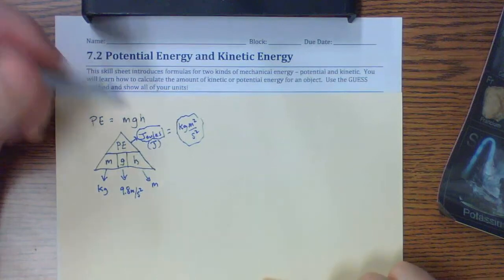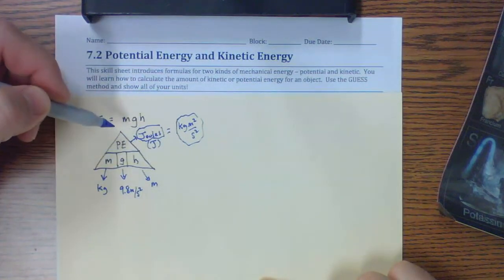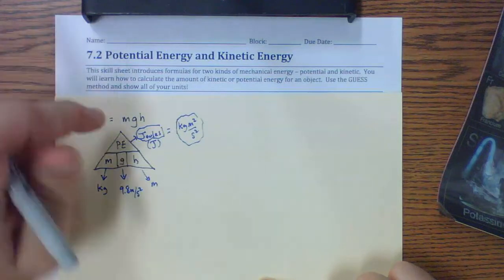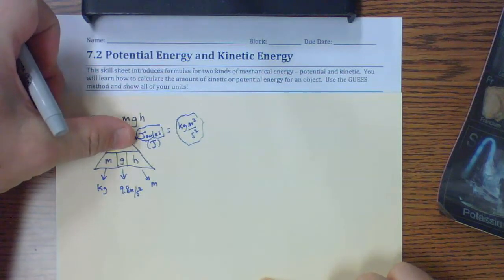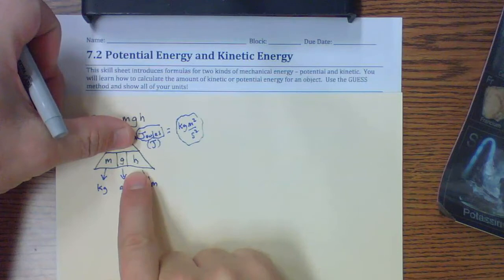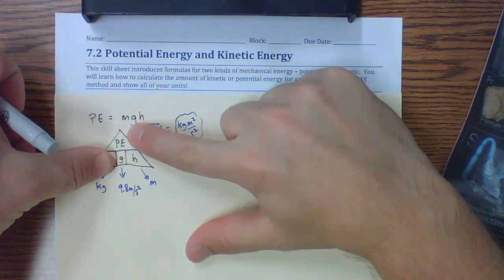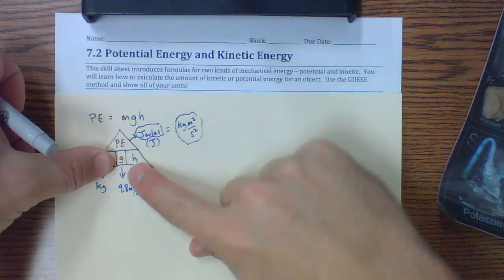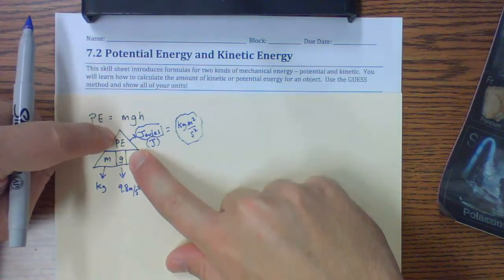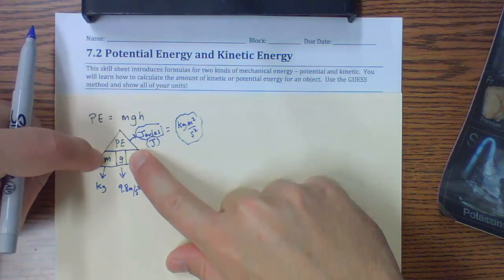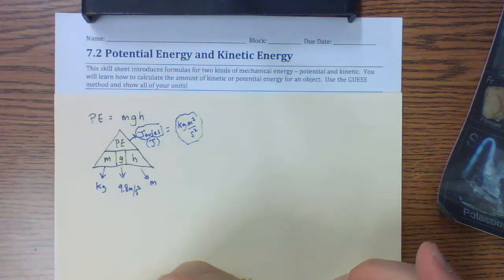If we're going to use the triangle: if I'm looking for the potential energy, it's mass times gravity times height. If I'm looking for the mass, it's potential energy divided by gravity and height. And if I'm looking for the height, it's potential energy divided by mass and gravity. That's how I like to set up that one.